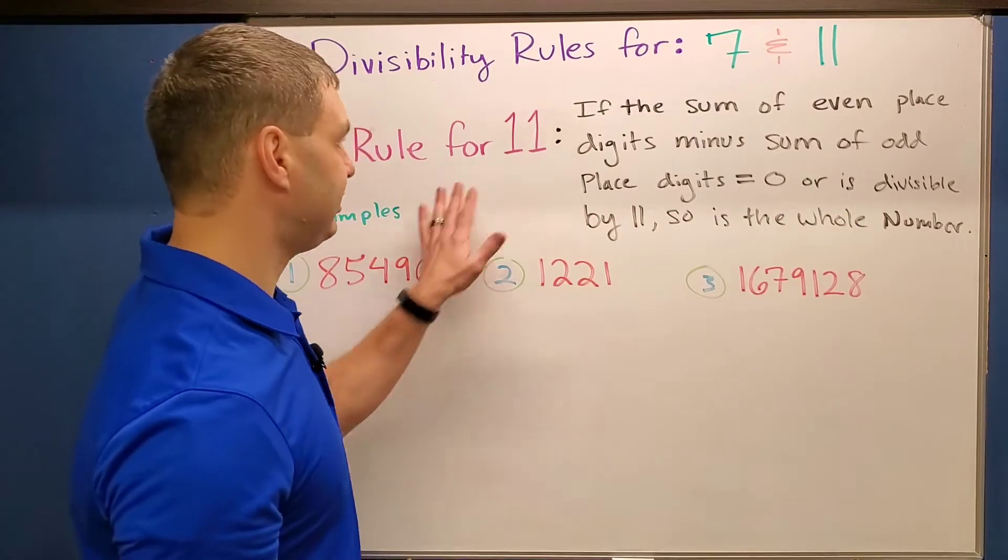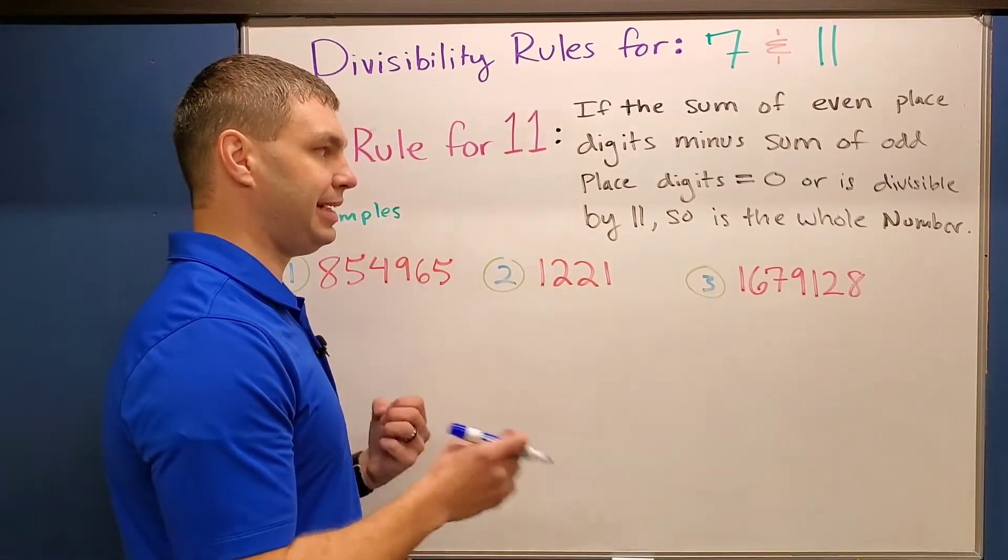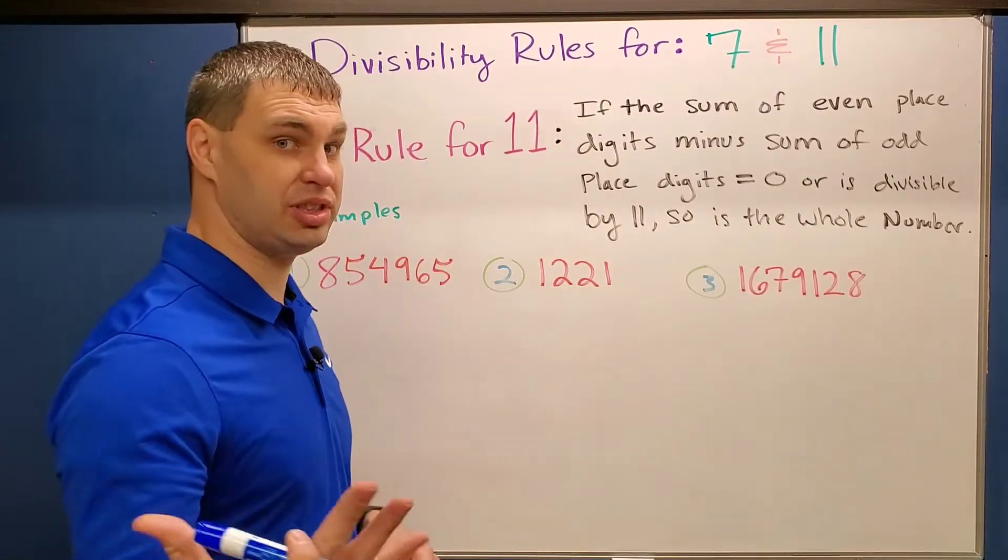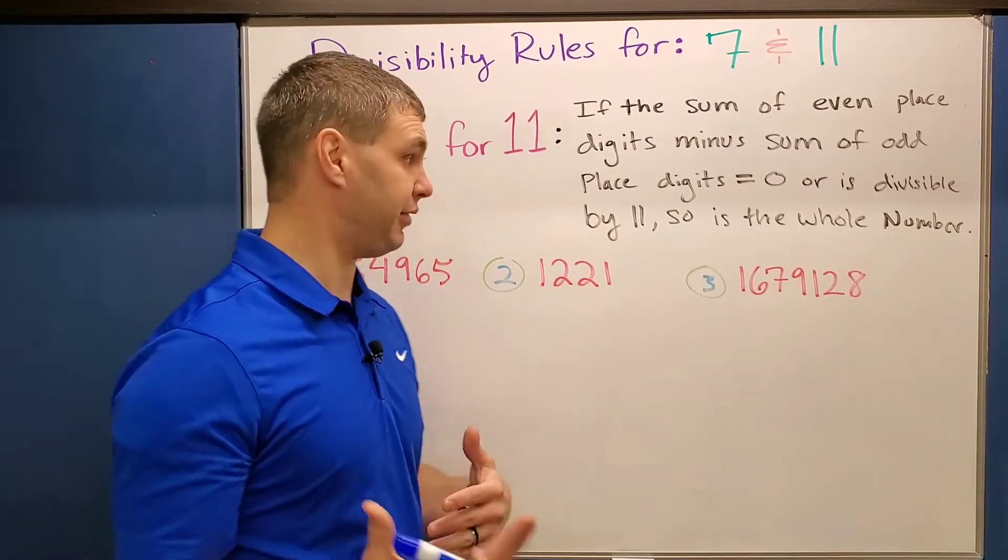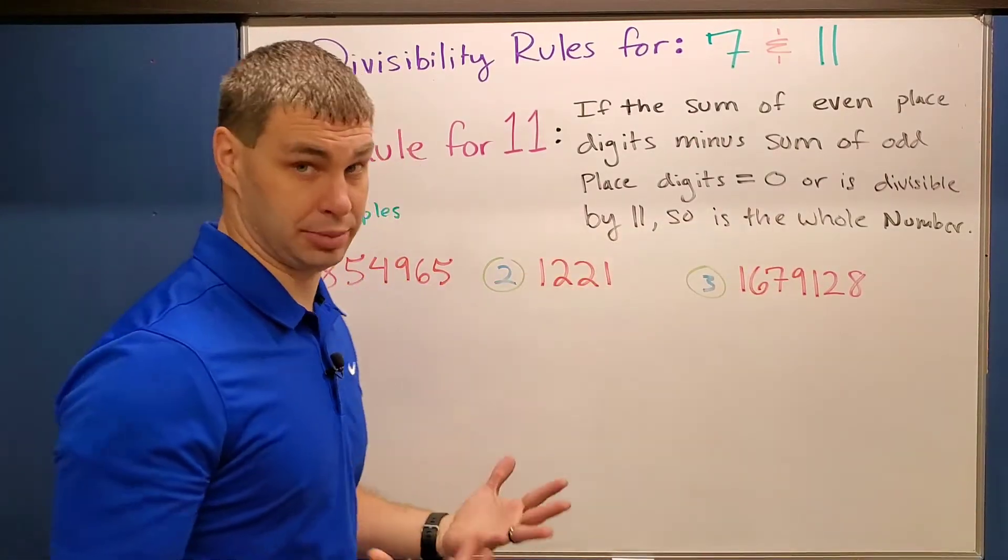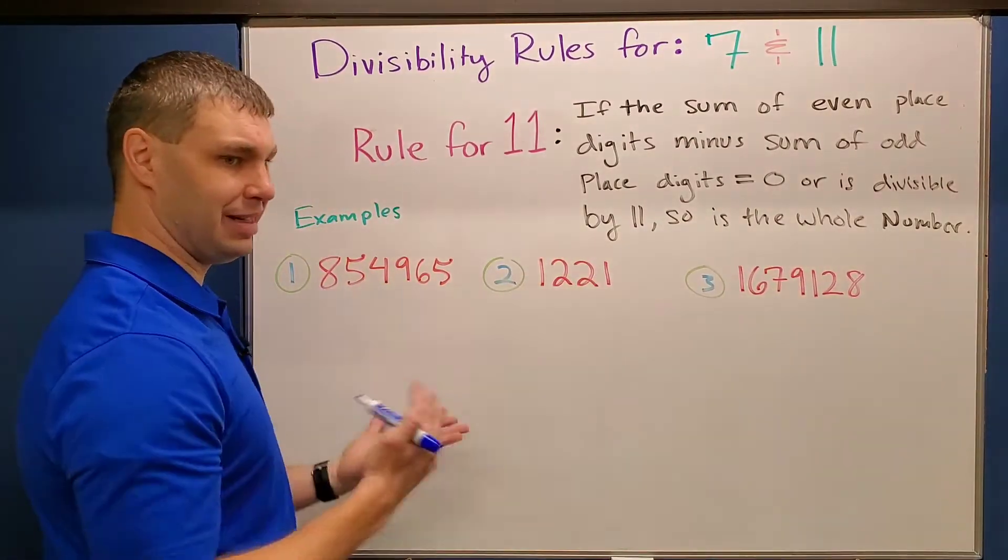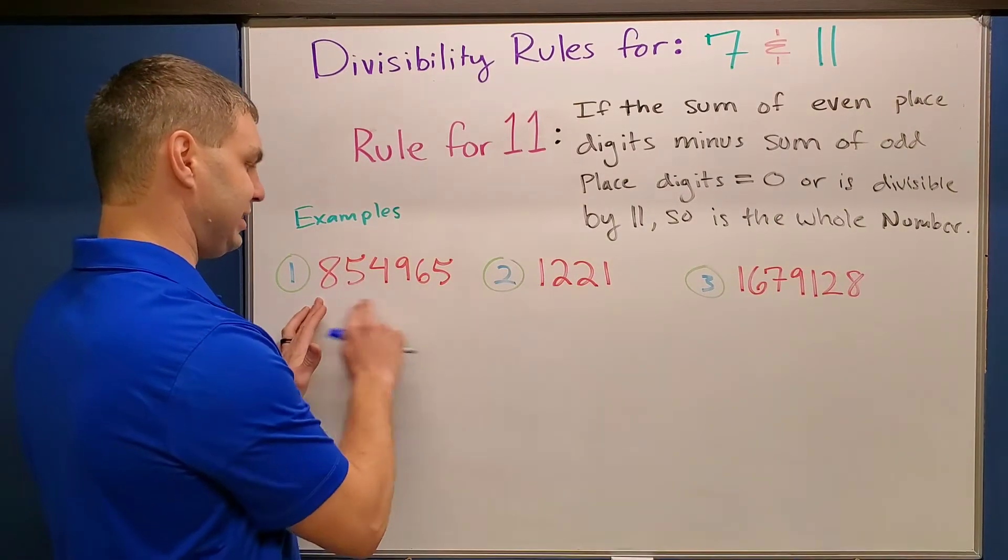So the divisibility rule for 11 says this. If the sum of the even place digits minus the sum of the odd place digits equals 0 or is also divisible by 11, then so is the whole number. Okay, so what I mean by even and odd digits here is if you think this one has 6 digits, right?